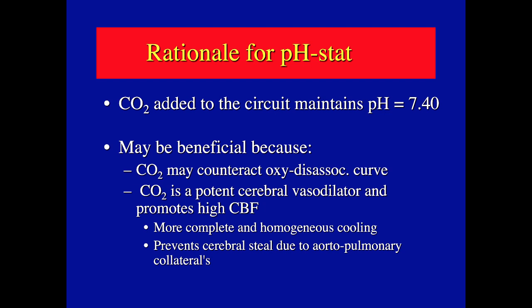For deep hypothermic circulatory arrest using pH stat, you may actually have to add CO2 into your gas line that ventilates the oxygenator to increase CO2 content and maintain pH 7.40. From a technical standpoint, it's important to have inline arterial blood gas management to control that CO2. If you're titrating CO2 into your gas line, you need to monitor PCO2 continuously online.